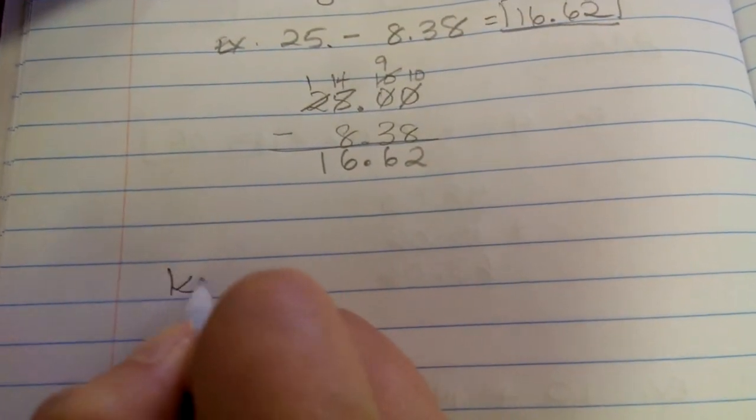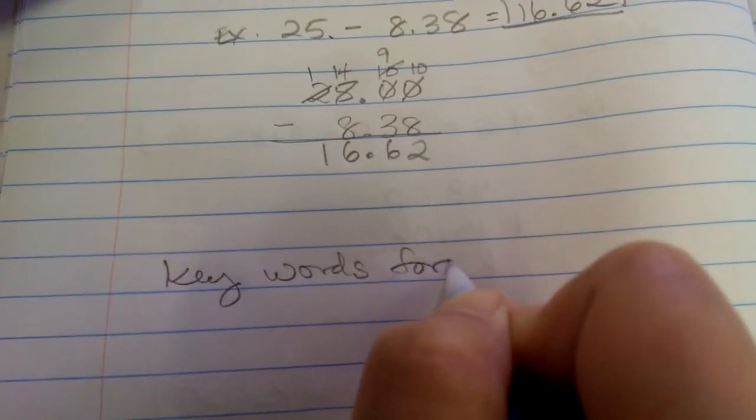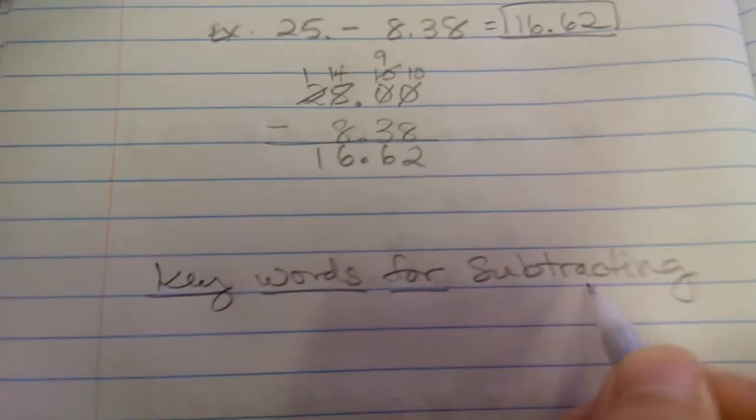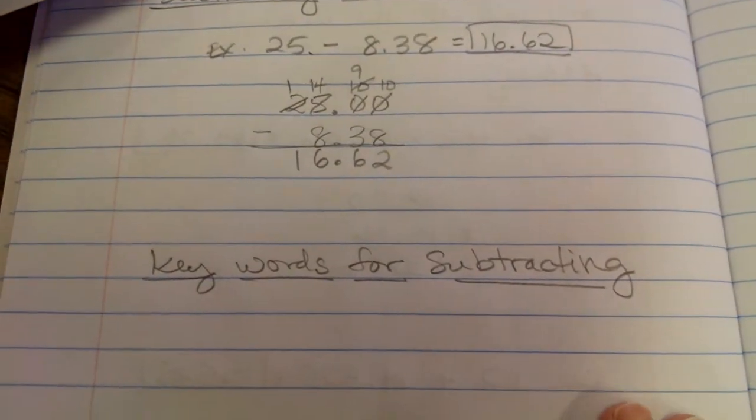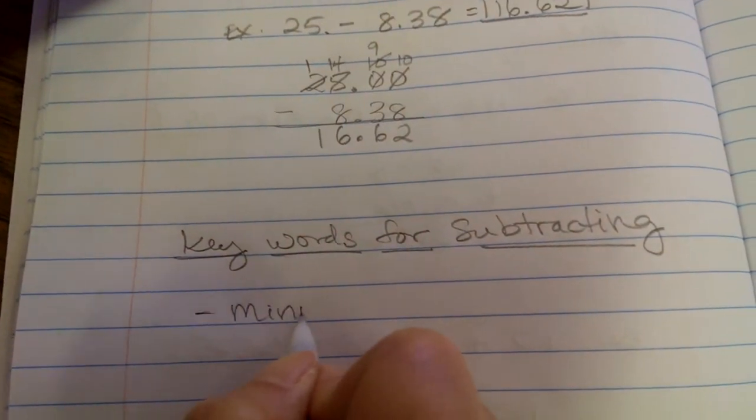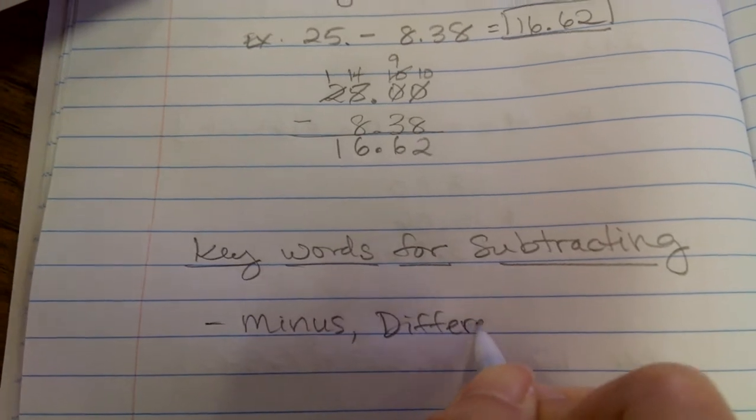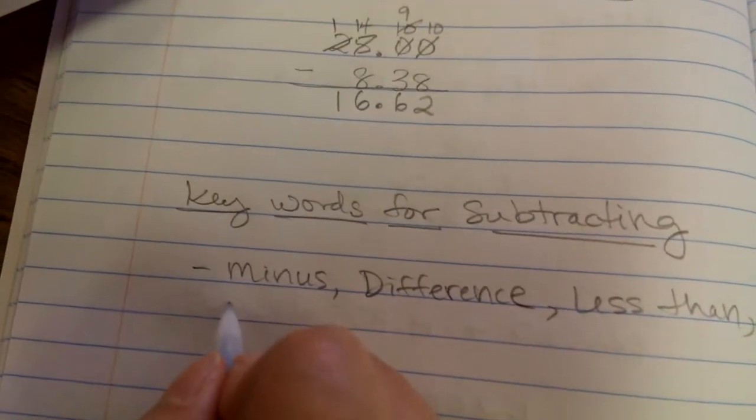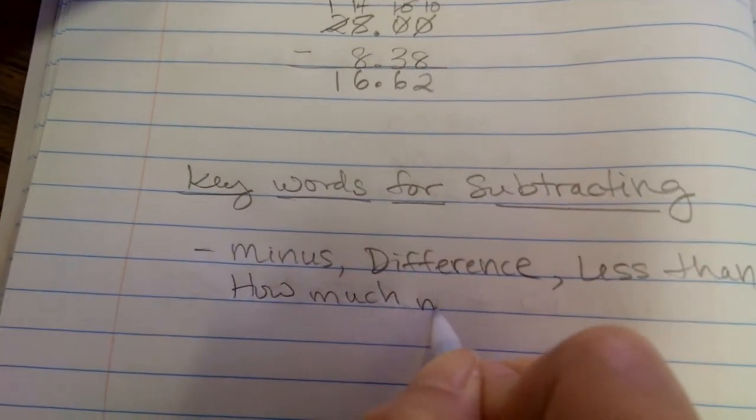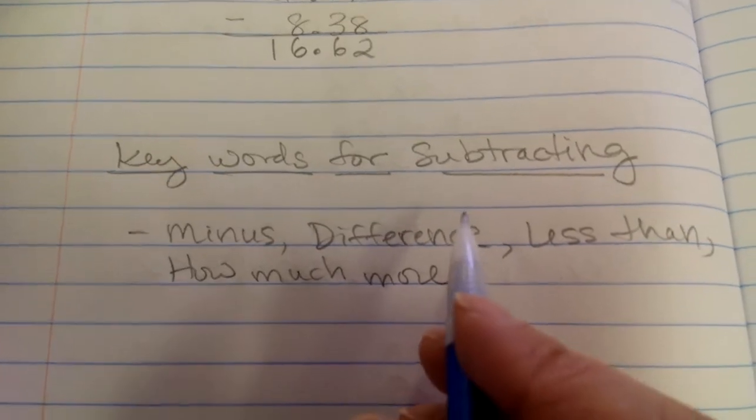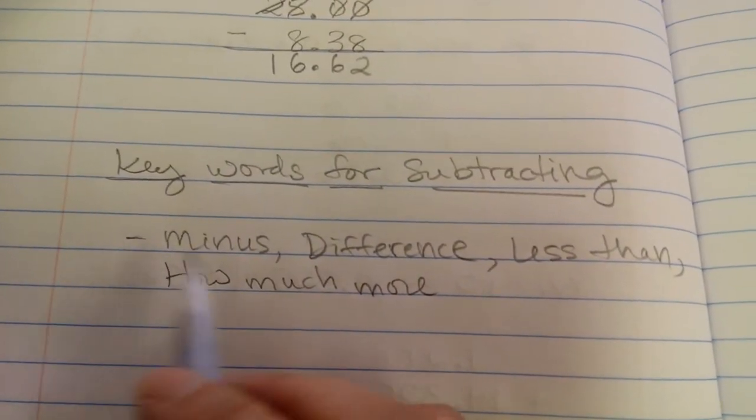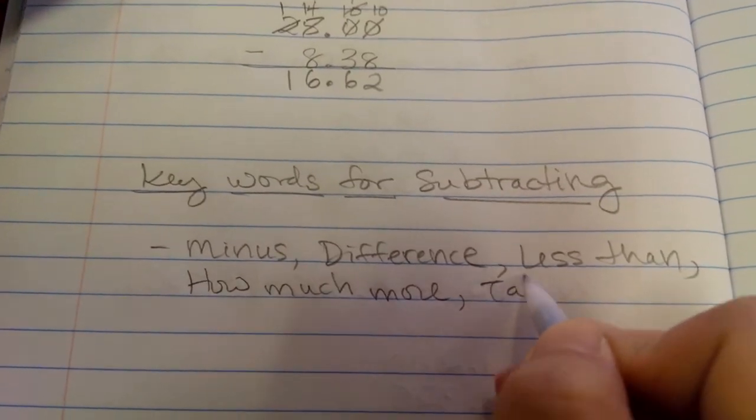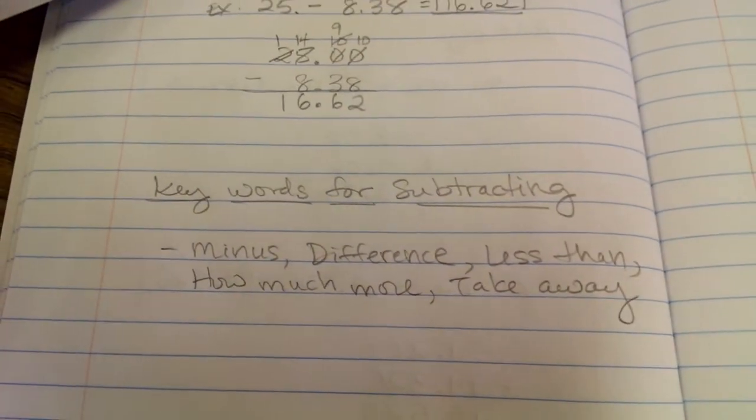Now, what are some key words for subtracting? Just like for adding, when you read a word problem, there are key words that tell you you're going to subtract. So what are some key words for subtracting? Well, if it says minus, because minus means to subtract. If it says find the difference, difference is the answer to a subtraction problem, you would subtract. If it says less than, you would subtract. If it says how much more, so if you're comparing one person to another, like Halloween candy, how much more did Des get than Ashlyn, then you would subtract. And if it says take away. If you take something away, you would subtract.